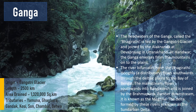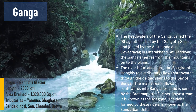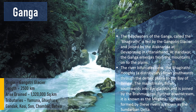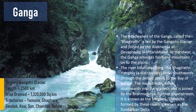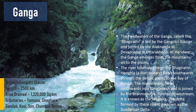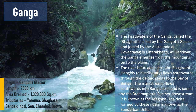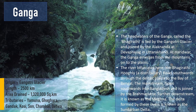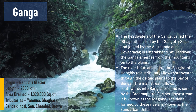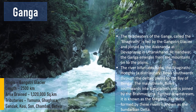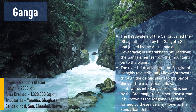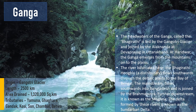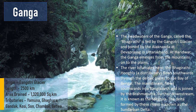The Ganga river originates from the Gangotri glacier; its total length is 2,500 km; area drained is 13,20,000 sq km. Its tributaries are Yamuna, Ghagra, Gandak, Kosi, Son, Chambal, and Betwa. These were important rivers — the Indus, Ganga, and Brahmaputra — with their origin, length, area, and tributaries being very important from the exam point of view.